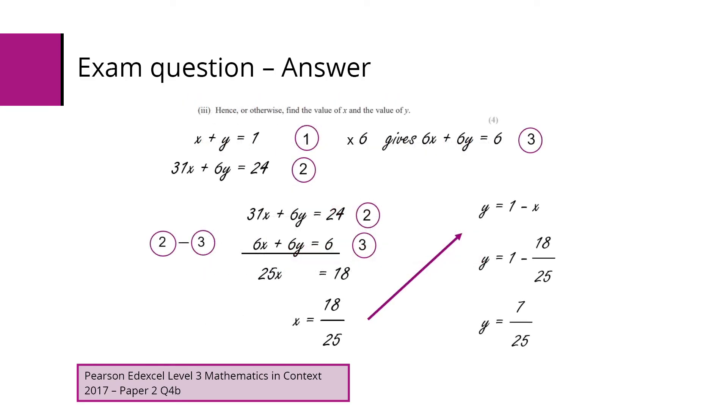So now we have two equations with two unknowns. Using the top equation, we've got to label that number 1 and times it by 6. We then get 6x plus 6y equals 6. If we call that equation 3, the 31x plus 6y equals 24 is equation 2. We can now go through our process. We can subtract those equations to eliminate the y's. We end up with 25x equals 18. Divided by 25 gives us x equals 18 over 25. Using our first equation, we know that y equals 1 minus x. Therefore, y must equal 7 over 25.